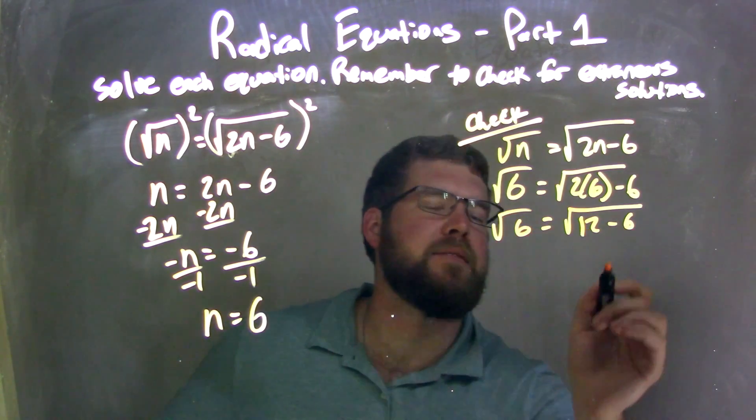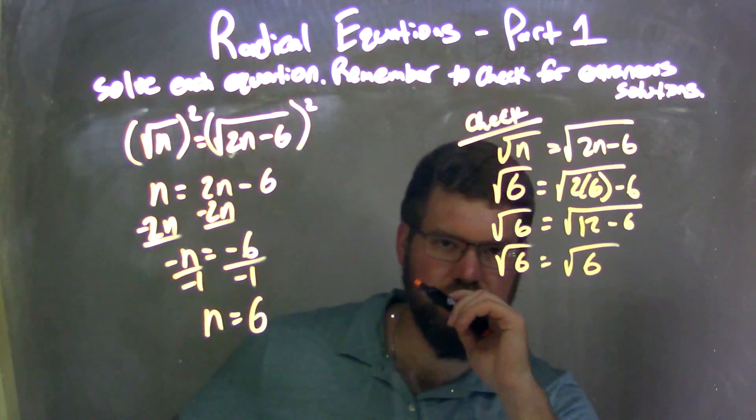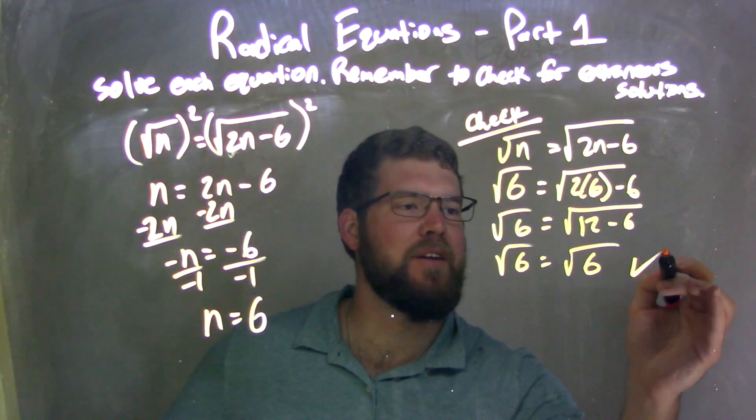So we have 12 minus 6 here. Then, 12 minus 6 is just a positive 6. My left and right equations are equal. Fantastic. Check.